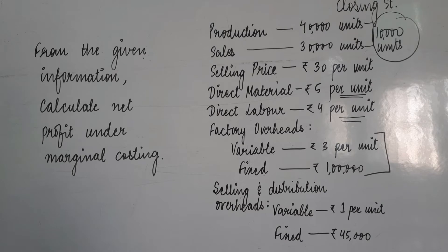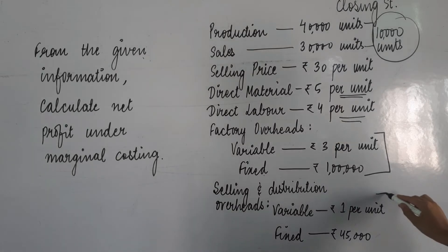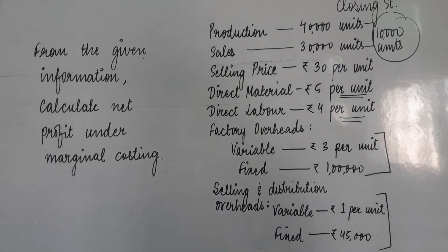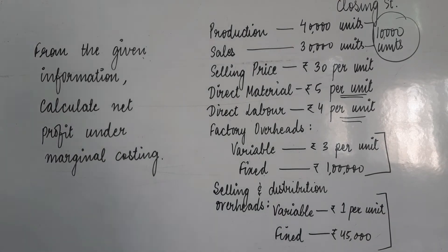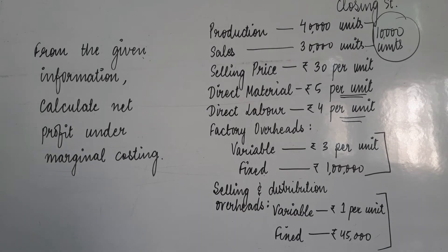Then they have given selling and distribution overheads, again in different categories: variable and fixed. So from this information, now you have to draw the income statement in the marginal costing format. You have to draw that format and calculate the net profit.